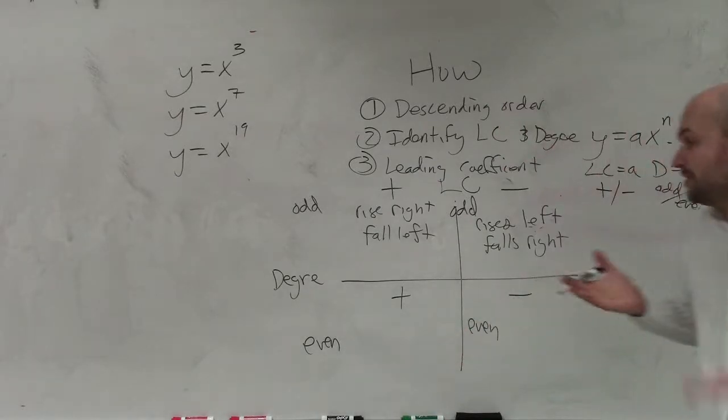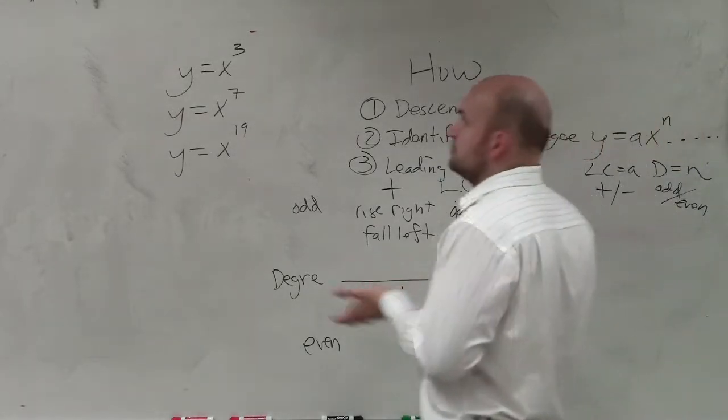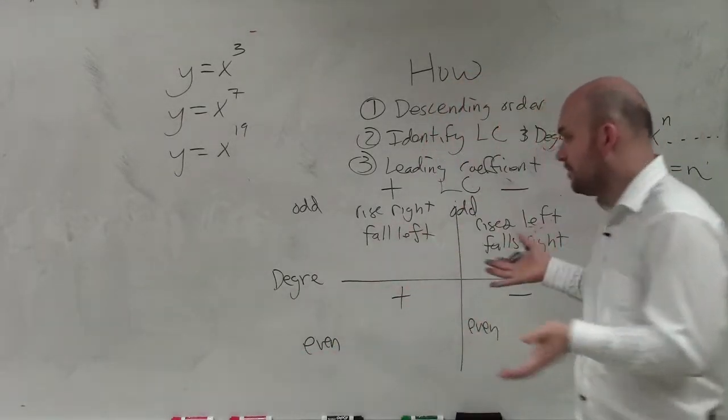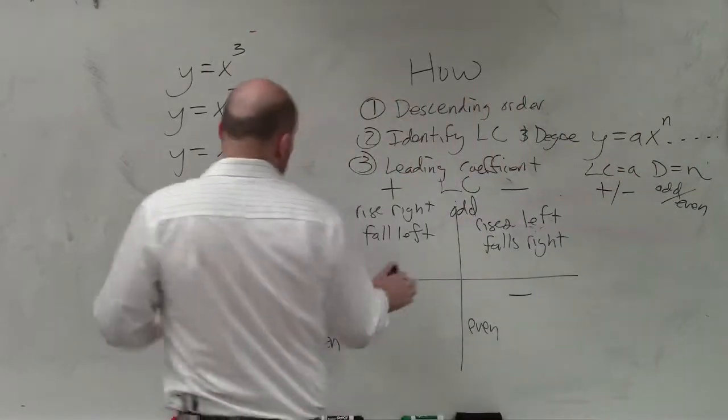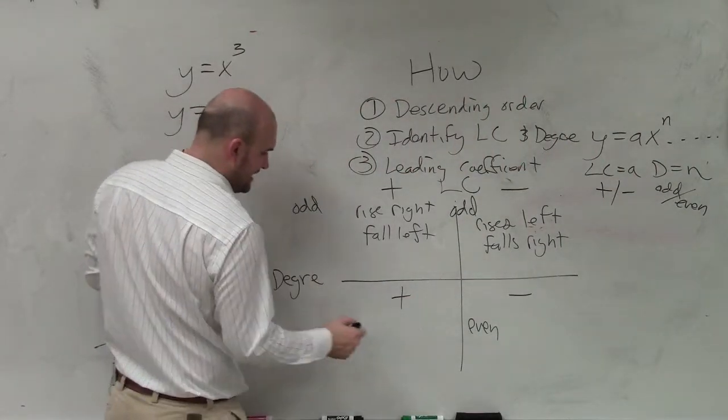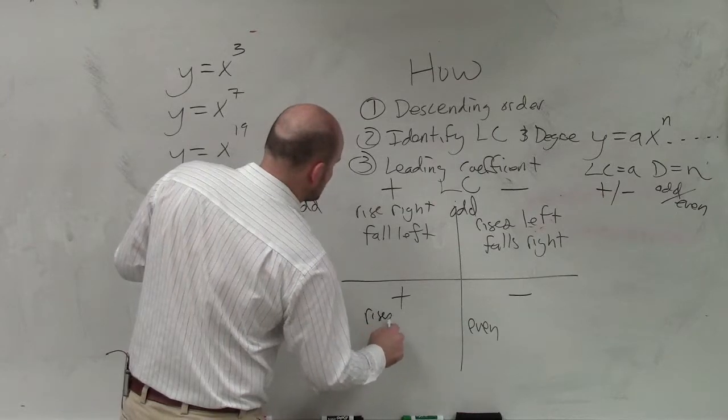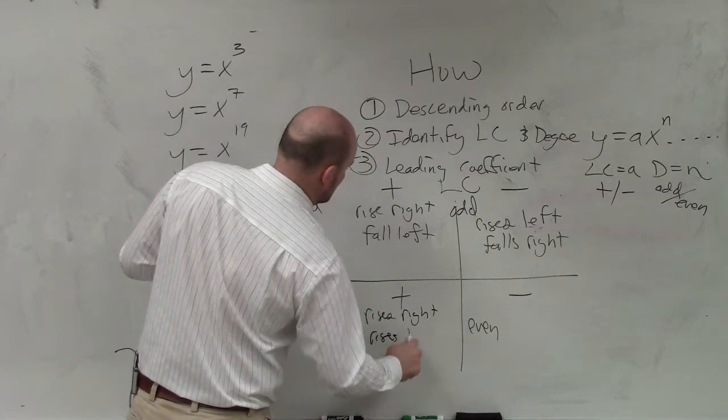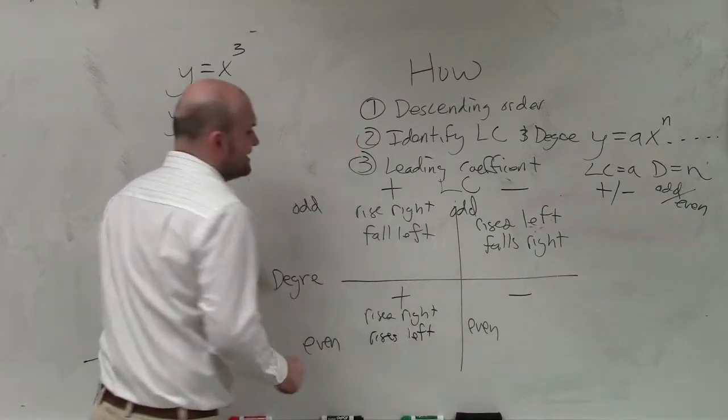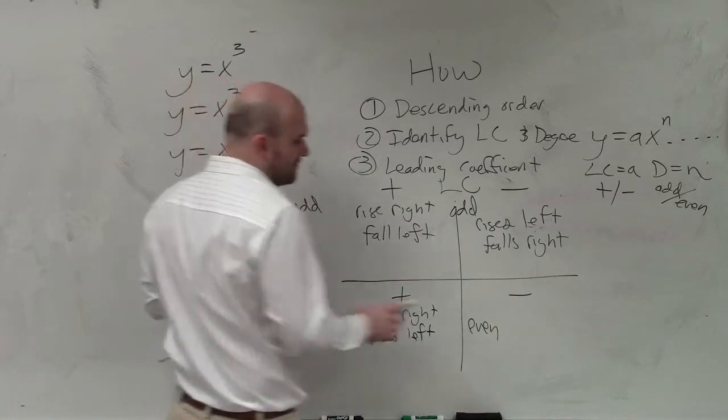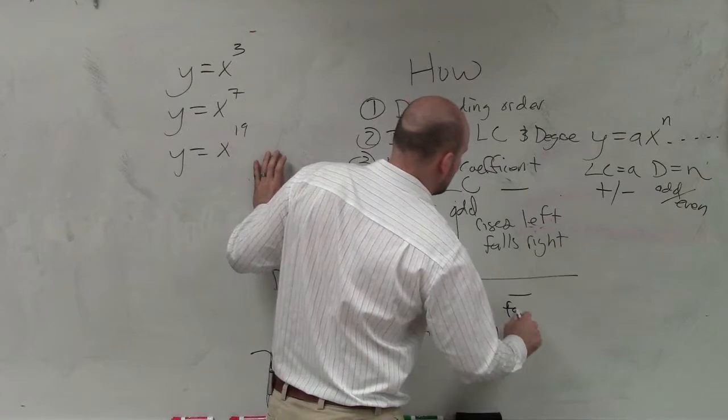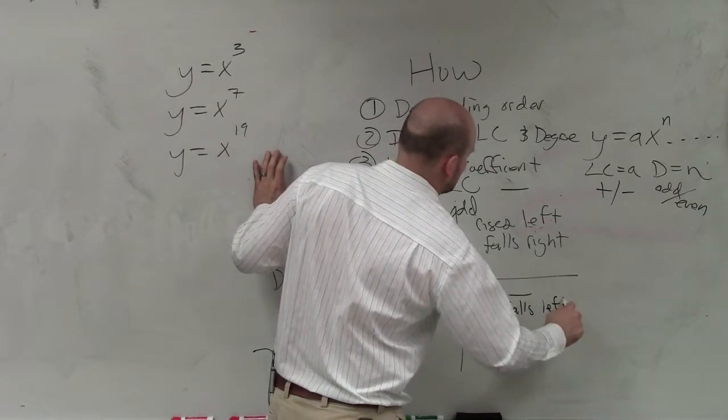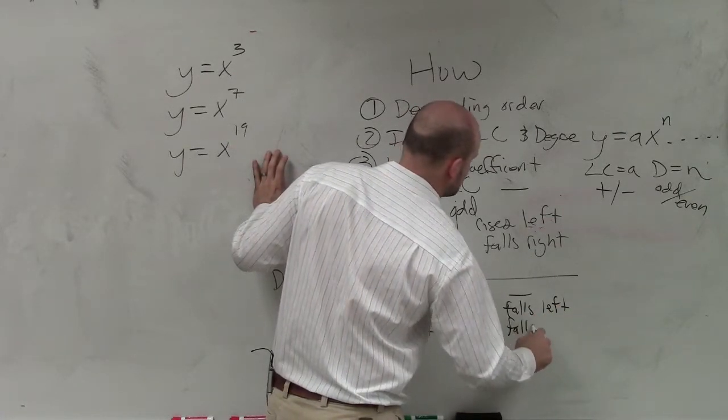Obviously, it doesn't matter if it's a positive large number or small number. If it's positive, it's going to fall within that. If I have a positive leading coefficient and an even degree, then my end behavior rises right and rises left. And if it's a negative coefficient but an even degree, then it falls left and falls right.